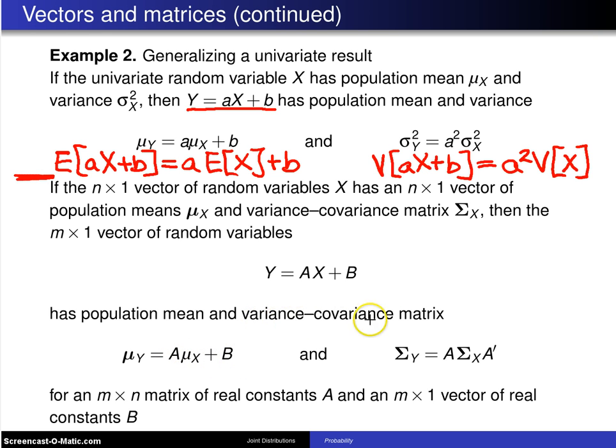and variance-covariance matrix Σ_Y = AΣ_XA^T for an n×n matrix of real constants A, and an n×1 vector of real constants B.